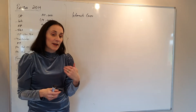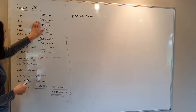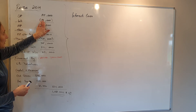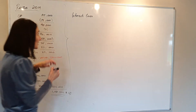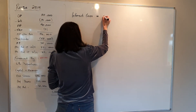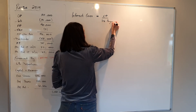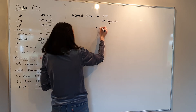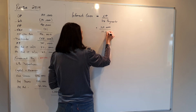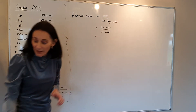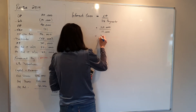Think of interest cover as: how many times could you pay your interest payments? Interest is paid out of operating profit. In this question, interest is 15,000 and operating profit is 105,000. The formula is operating profit over interest payments. So: 105,000 / 15,000 = 7 times — and that's really, really good.